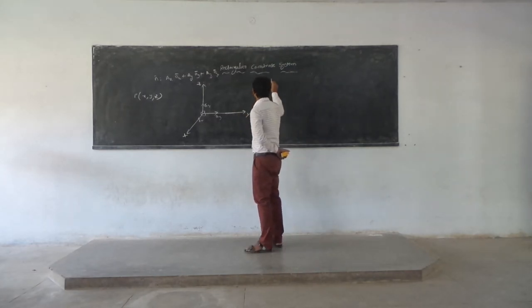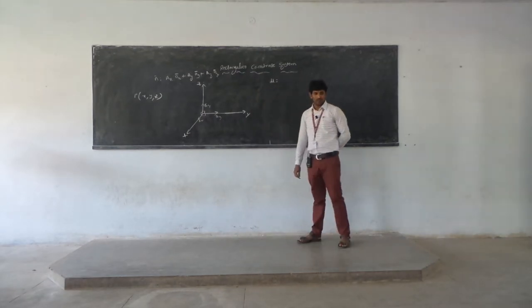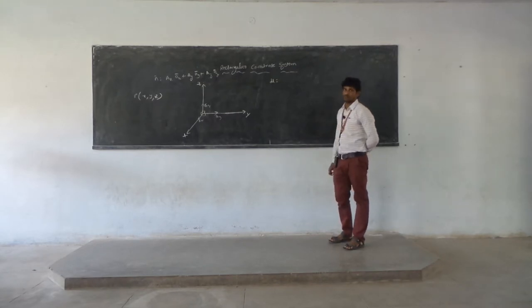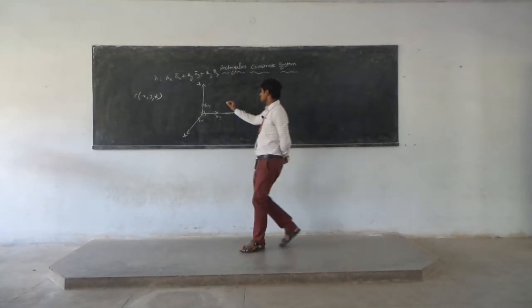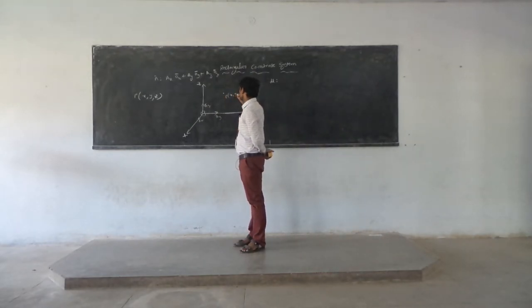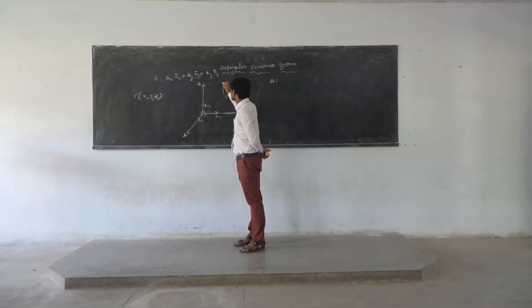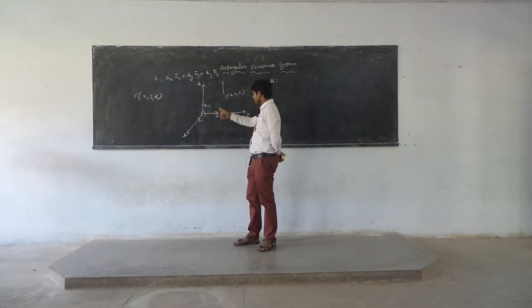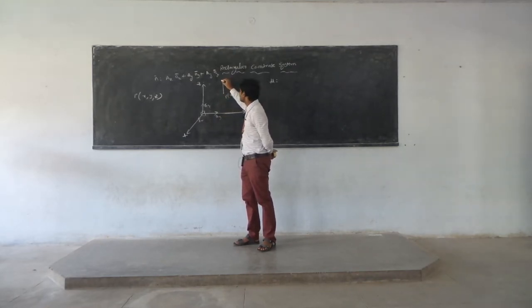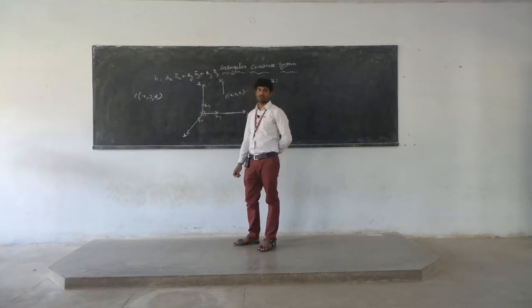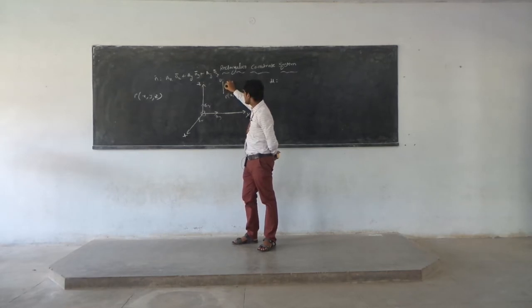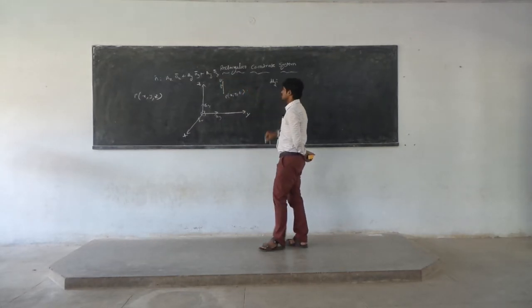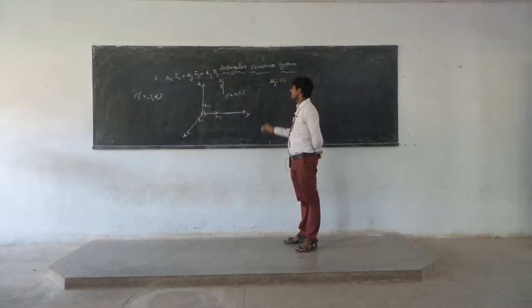Coming to the differential length in rectangular coordinate system — in electromagnetic fields, differential length, differential surface, and differential volume are the three major topics. Consider a point P in rectangular coordinate system with coordinates x, y, z. Assume this point moves along one particular direction — specifically, this point is moving only along the z direction. Let us assume this small differential length ends at point Q. The change in length is only along the z direction, so this small length is treated as dz.